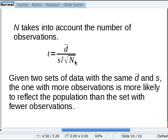n is in the formula because we have to take into account the number of observations. If you have two sets of data with the same average difference and the same standard deviation, the one with more observations is more likely to reflect the population than the set with fewer observations. Because n is divided in the denominator, it flips up to the numerator, so the larger n is, the larger the t-statistic will be.